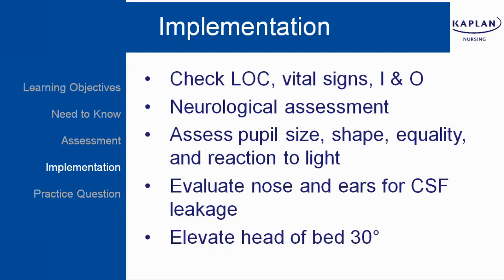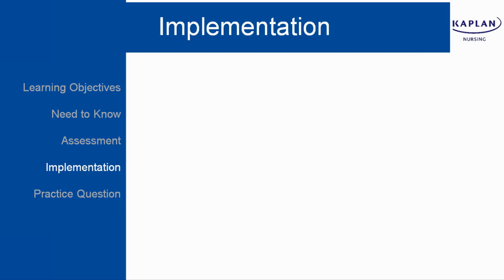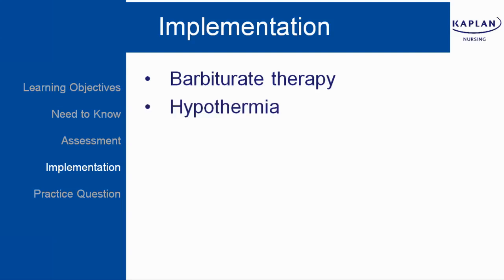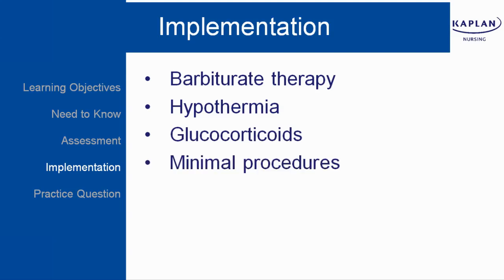Elevate the head of the bed 30 degrees to help decrease intracranial pressure. Additional implementations include barbiturate therapy, which decreases cerebral metabolic rate, and hypothermia, which decreases metabolic demands. Glucocorticoids may also be used. Perform only minimal procedures — limit extra procedures and cluster care so you're not coming in every hour, as many activities can increase intracranial pressure. Also maintain seizure precautions.